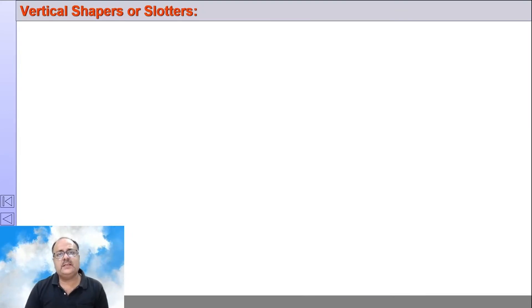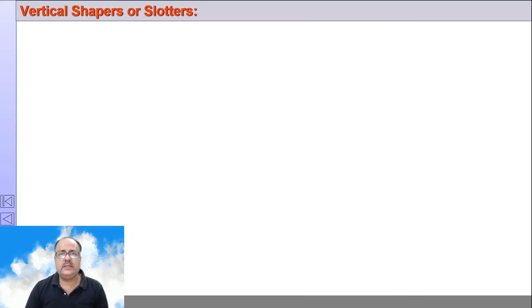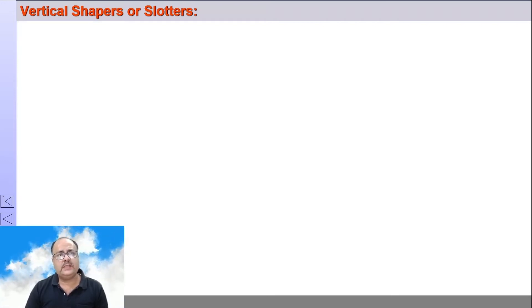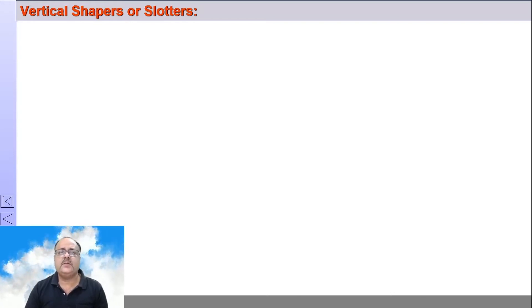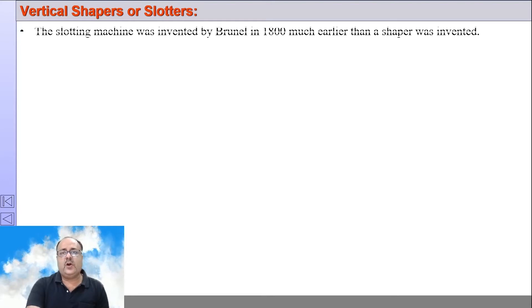The slotter machine works just like a shaper machine and does jobs similar to what is done on a shaper machine. Therefore, it is also referred to as a vertical shaper. The slotter machine was invented much before the shaper machine — it was invented by a person called Brunel in the year 1800.